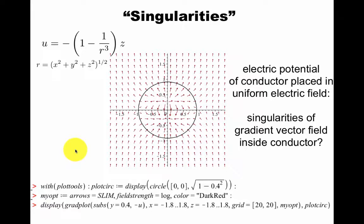So what's a singularity? A singularity of electric potential of a conductor placing uniformity of the field has these dipole-looking singularities inside the conductor. You can think of them as image charges, just so that we get the right boundary condition for the field out here.